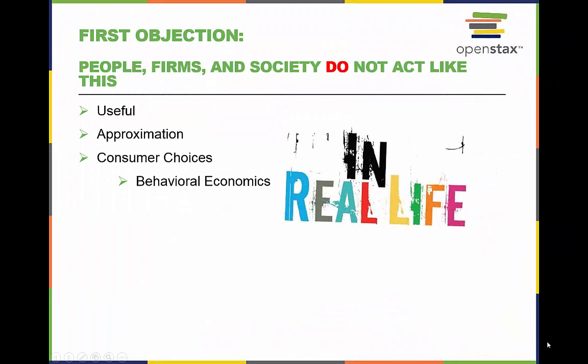Two objections that tend to rise regarding economics are its method of scientific application and the morals related to economic issues. First is the fact that people, firms, and society do not act like many economic theories and models portray. Economists would not argue that the theories and models used in economics are an exact science, but they would argue that they are useful approximations of these economic actors.